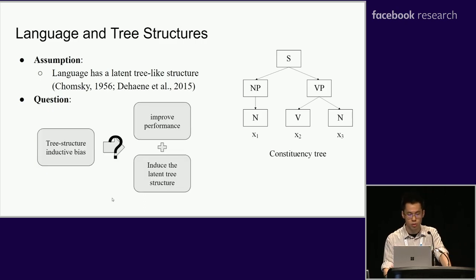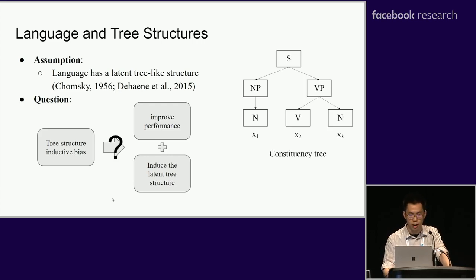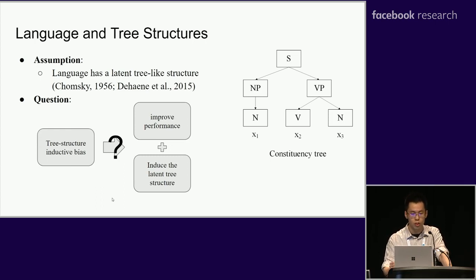Given this latent tree structure assumption, we want to ask one question: could we provide a new inductive bias so that the model could induce the latent tree structure from a downstream task without a supervised signal for the structure? And also, the model should leverage the induced structure to achieve stronger performance on the task.